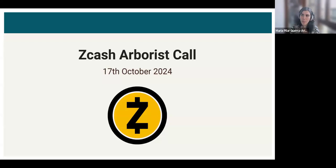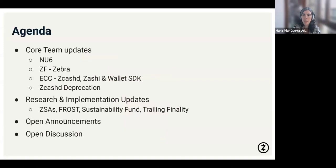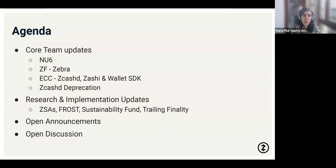Welcome everyone. This is the Arborist call for the 17th of October. Today's agenda includes an update on NU6 activation, updates from the Zcash Foundation on Zebra and from ECC on ZcashD, SASHI, and the Wallet SDKs, a quick update on ZcashD deprecation, then research and implementation updates such as ZSAs, FROST, the Sustainability Fund, and Trailing Finality, followed by announcements and open discussion.